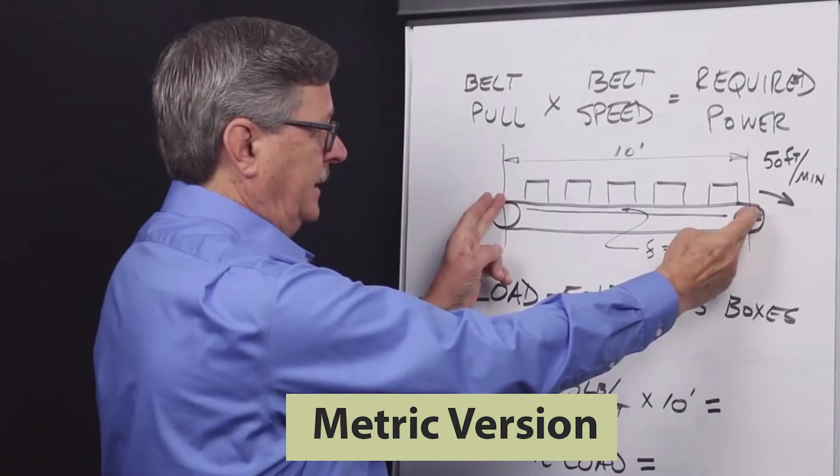In imperial units we say that one pound mass weighs one pound force on the earth's surface, so we need not convert the term pound into another unit of measure. However in SI units or metric units, one kilogram of mass weighs 9.81 newtons on the earth's surface.